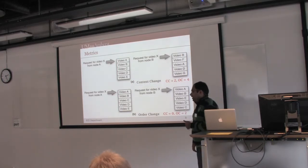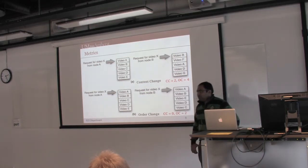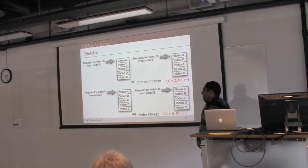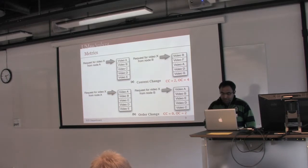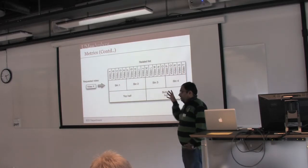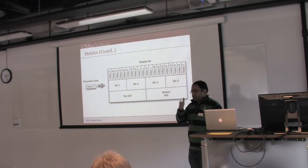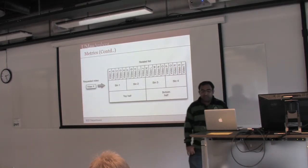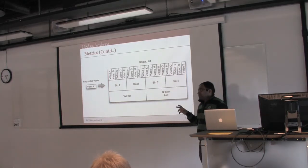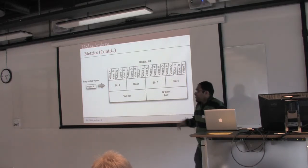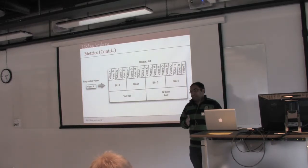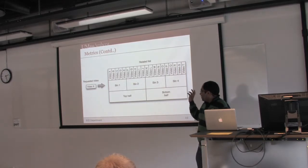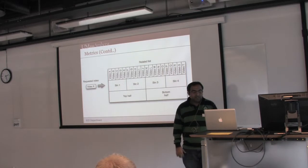Order change is important because we use the related list reordering approach to show that cache hit rate can be increased by reordering the related list. When there is order change in the related list, it reduces the effectiveness of our technique. Binning helps understand where in the related list the changes are happening most, and also helps determine whether the related list is offered from a single small pool or from close versus loosely related sets of videos for the top versus bottom halves.